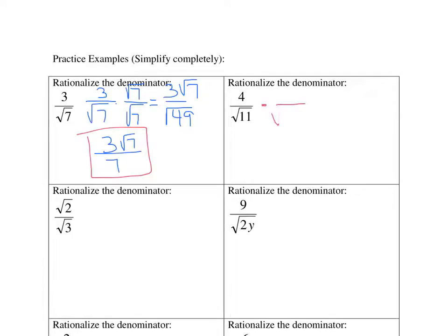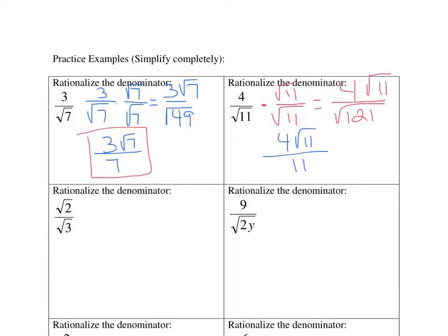Next: 4 over the square root of 11. I want to get rid of the square root of 11, so I'm going to multiply it times itself — that gives me the square root of 121. But I have to do the same thing in the numerator: 4 times the square root of 11 gives me 4 square root of 11. Now I simplify. The numerator stays the same, and the denominator — the square root of 121 — is 11. So the answer is 4 square root of 11 over 11.